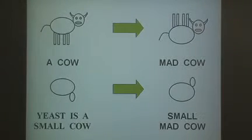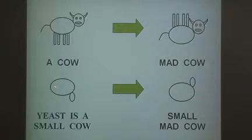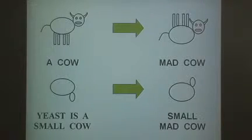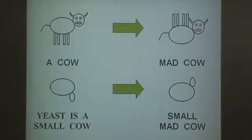Yeast is a unicellular eukaryotic organism — a microorganism, essentially. We can use all the microbial techniques. However, it has a typical eukaryotic organization of the cell which is not much different from humans and cows. Yeast is of course well known for its ability to produce wine, beer, and bread. However, yeast can also produce prions — yeast prions which can actually cause a kind of prion disease in yeast. And you can actually see those prions, like here on the slide, for example.